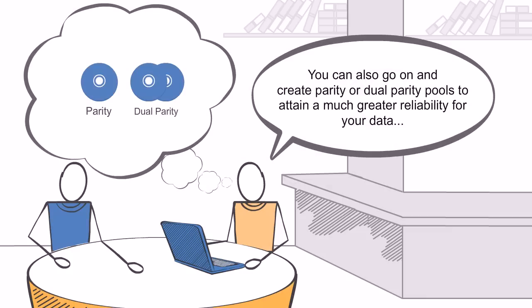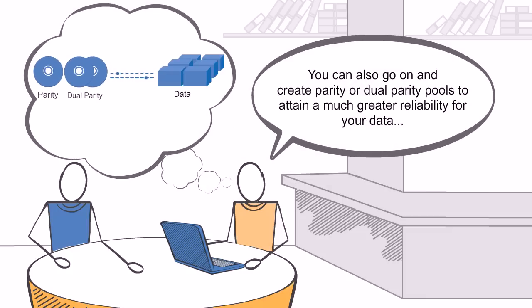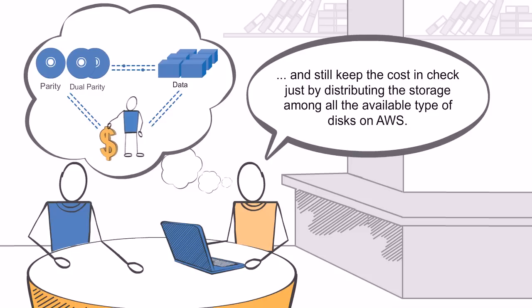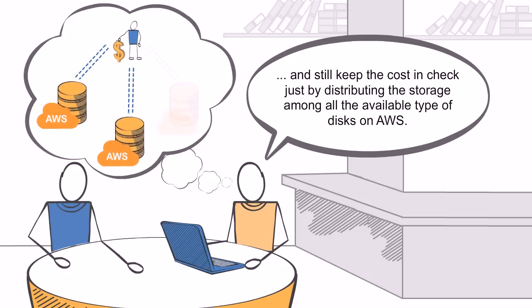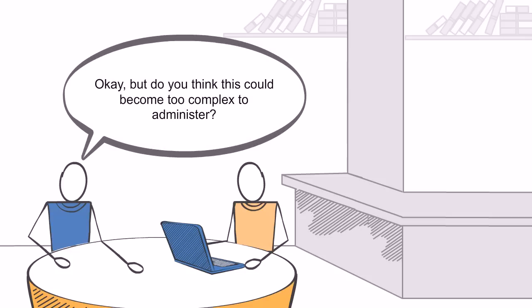You can also create parity or dual parity pools to attain much greater reliability for your data and still keep the cost in check, just by distributing the storage among all the available types of disks on AWS. But do you think this could become too complex to administer?